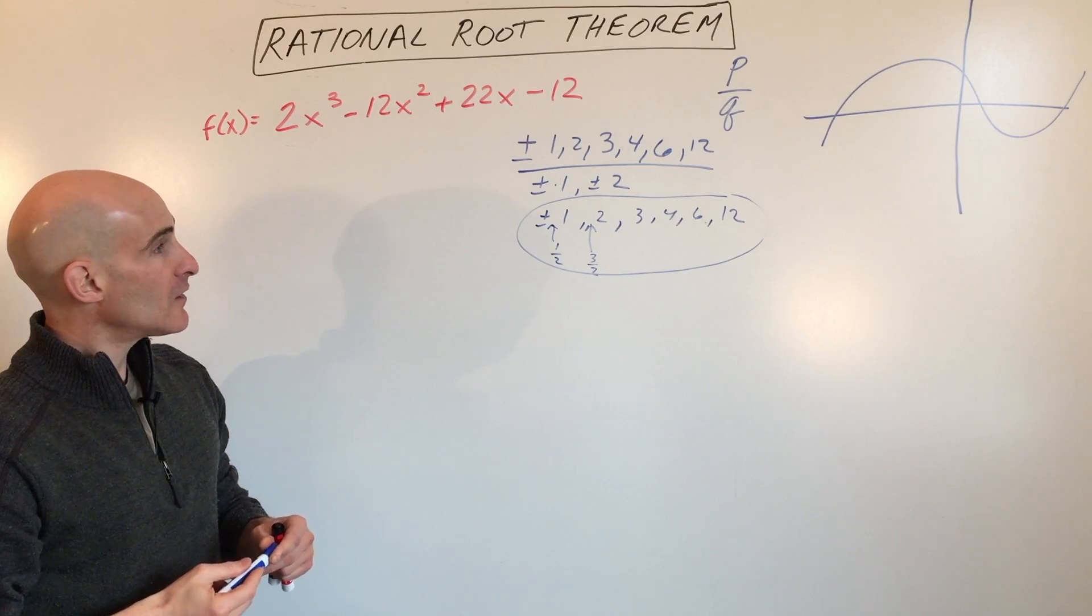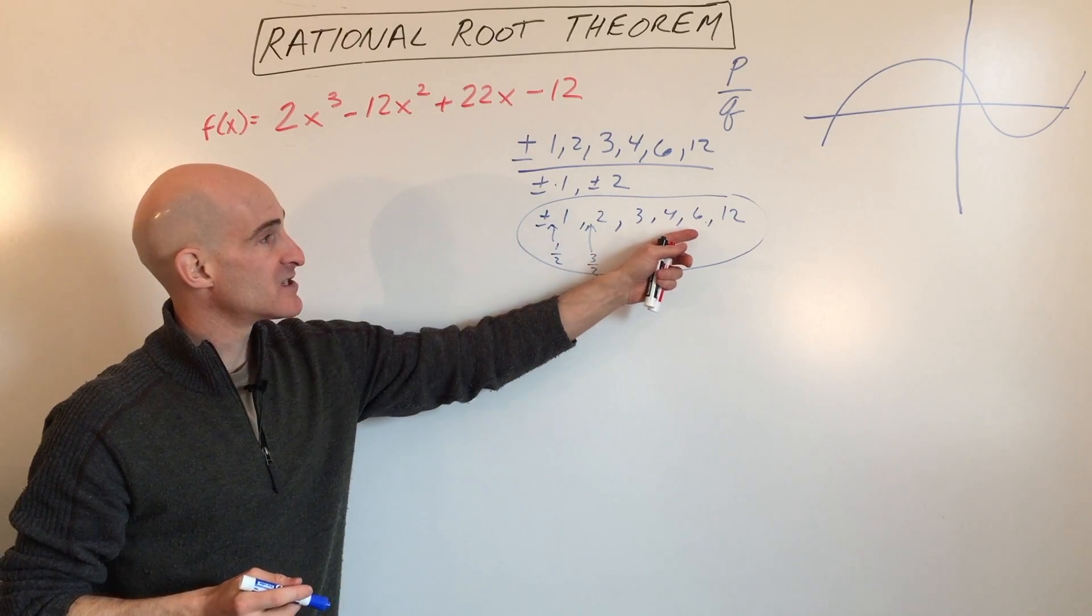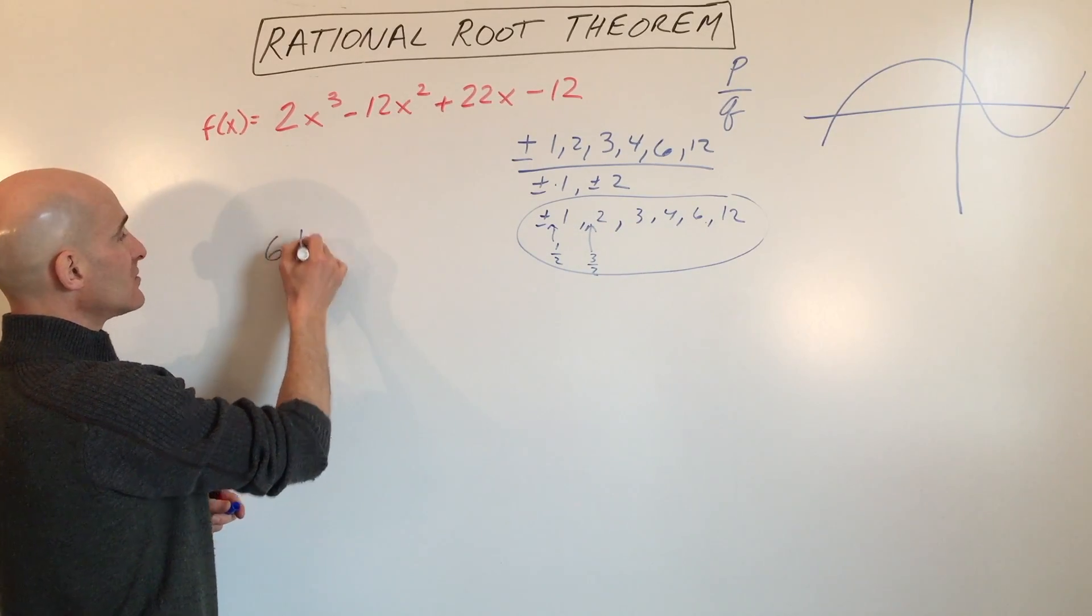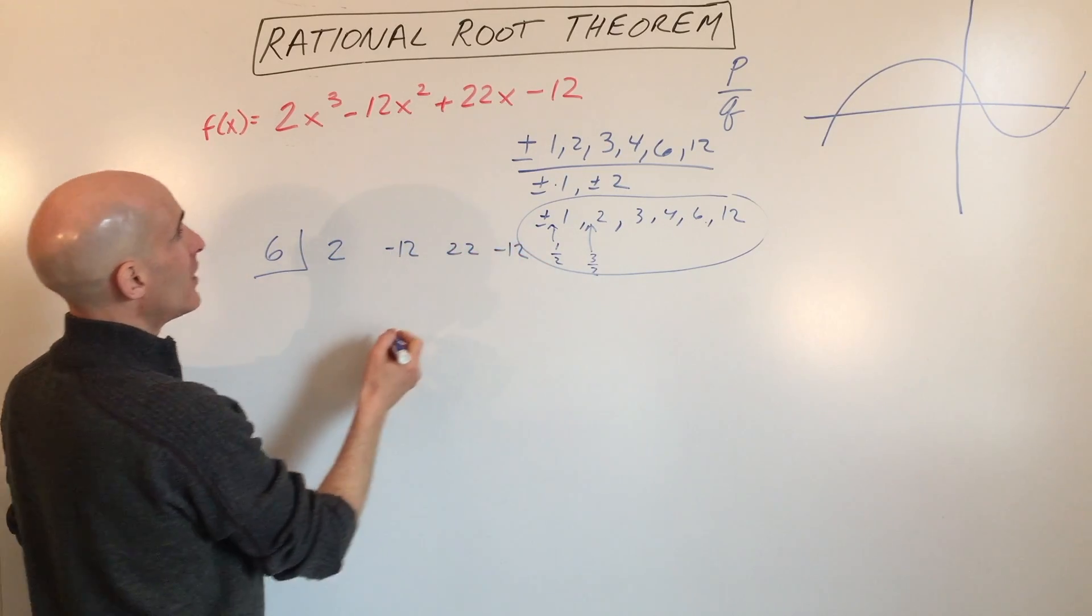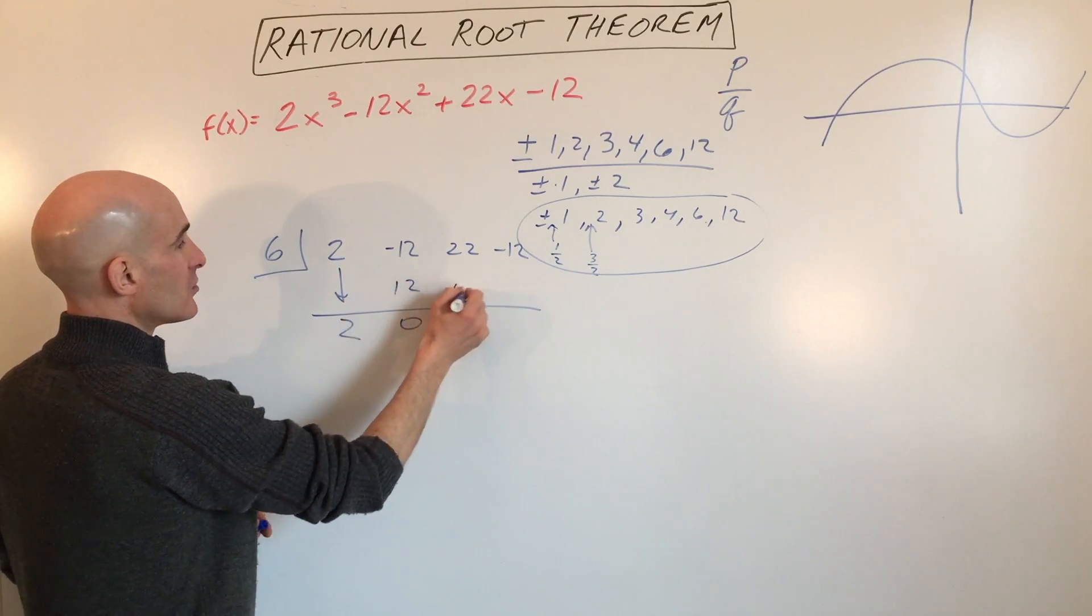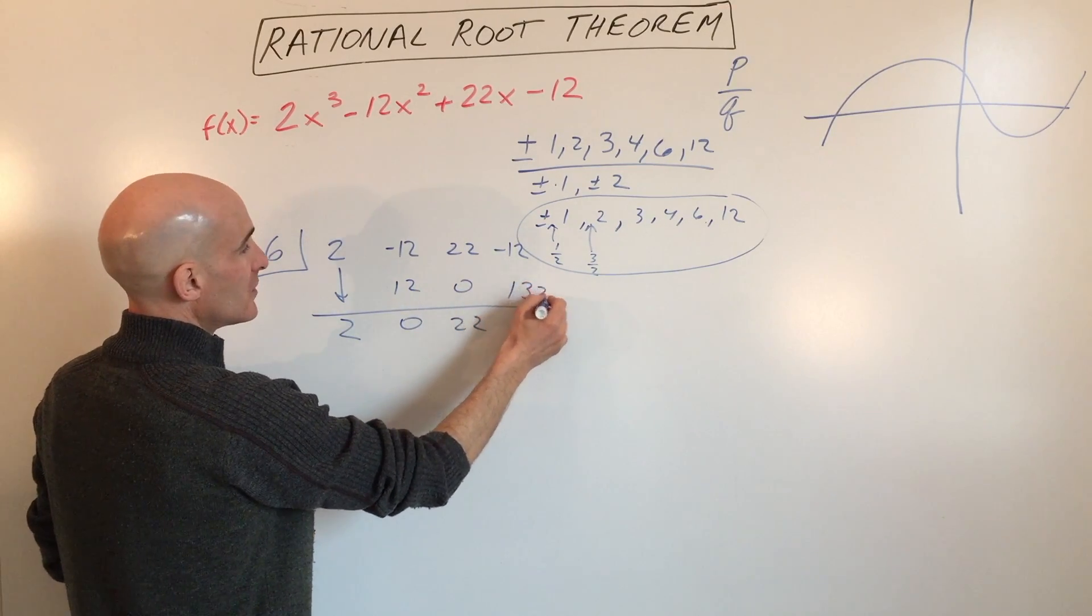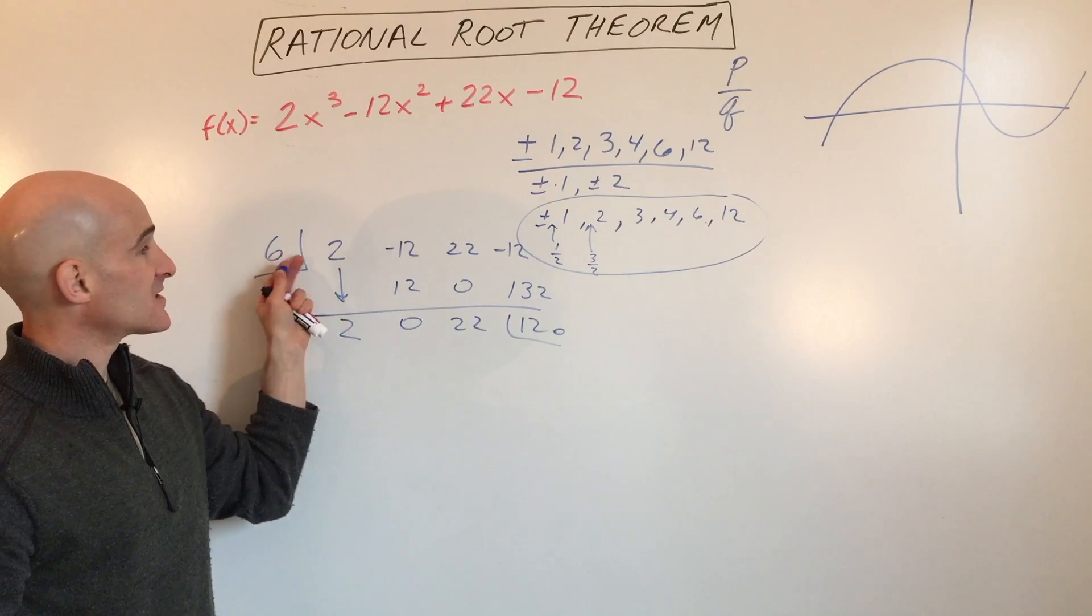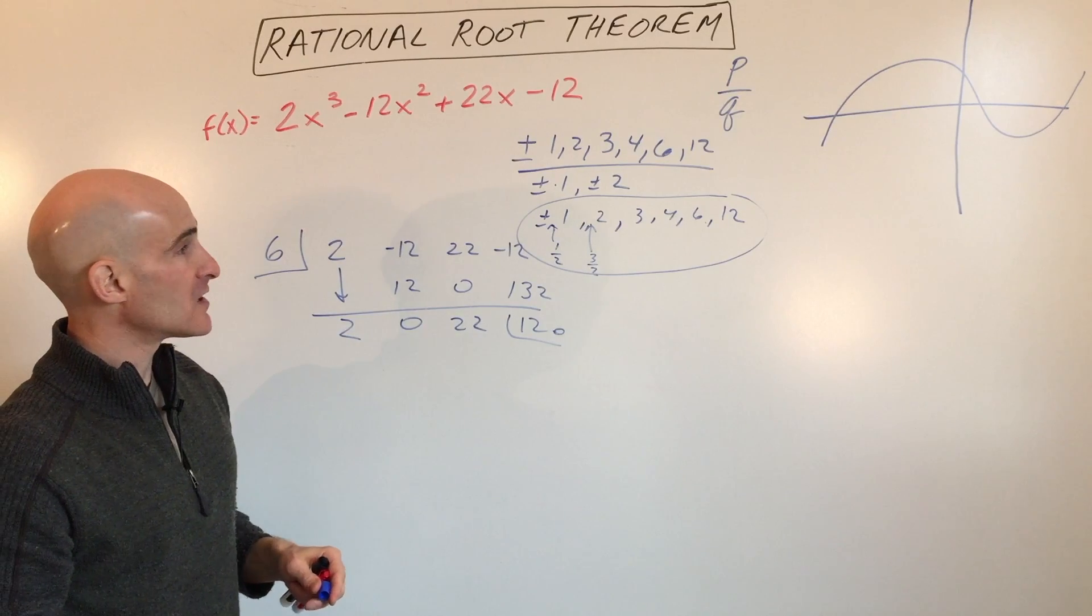What we do to test them out is synthetic division. Let's say we wanted to test to see if 6 was a root. We do synthetic division: 2, negative 12, 22, and negative 12. So this is 12, 0, 22, 120, 132, 120. This one didn't come out to 0, so that means 6 is not a zero, it's not a root of this polynomial. Cross that one off the list.